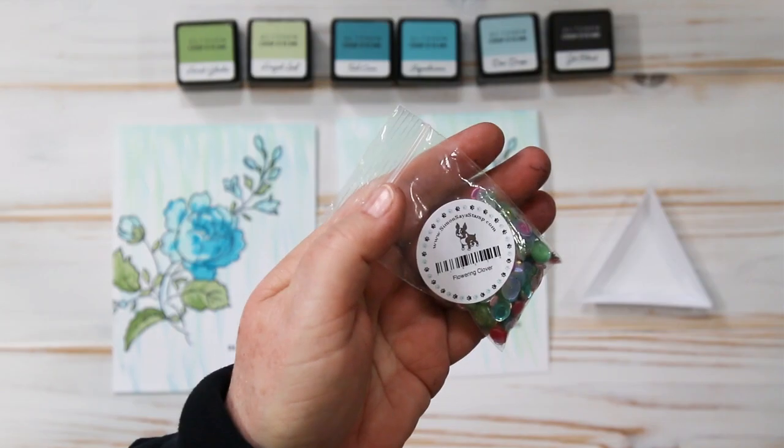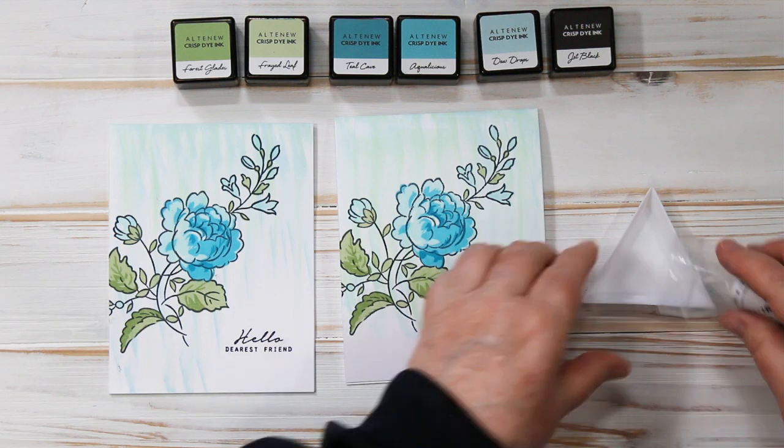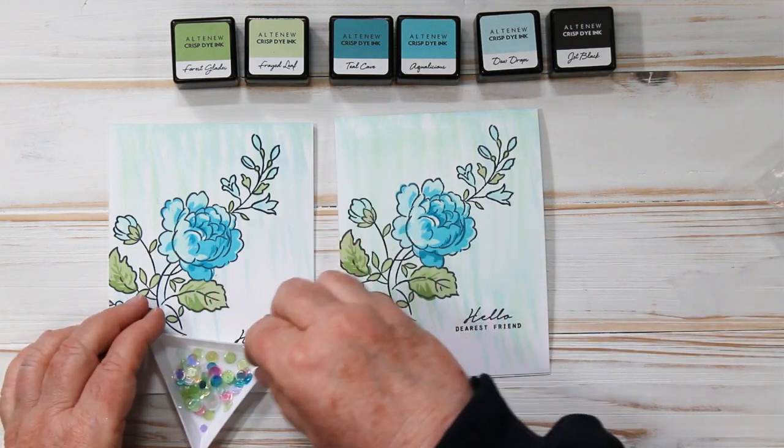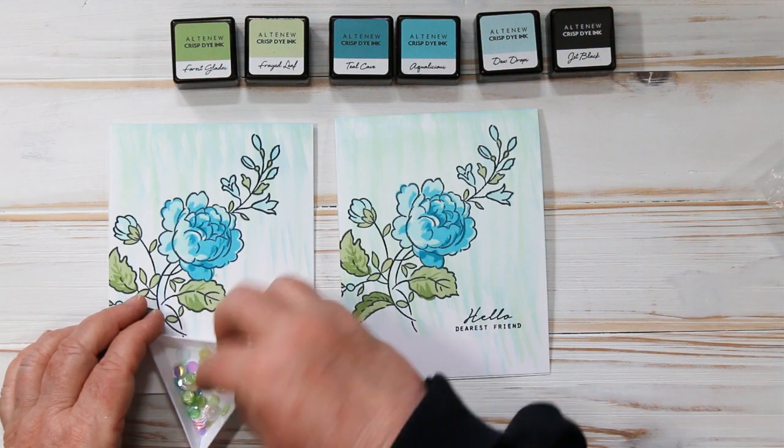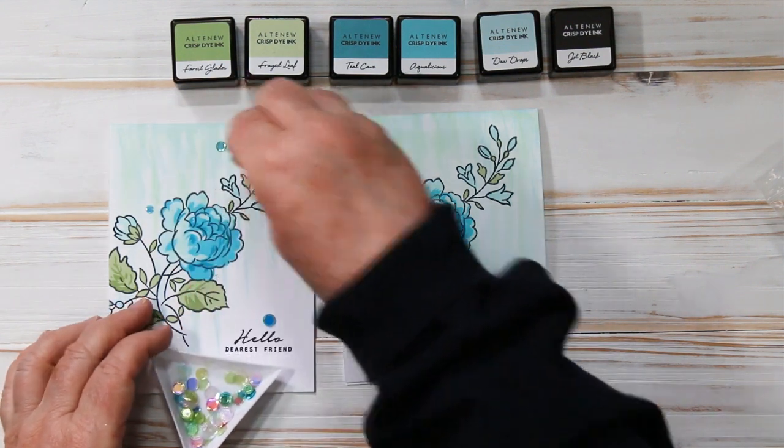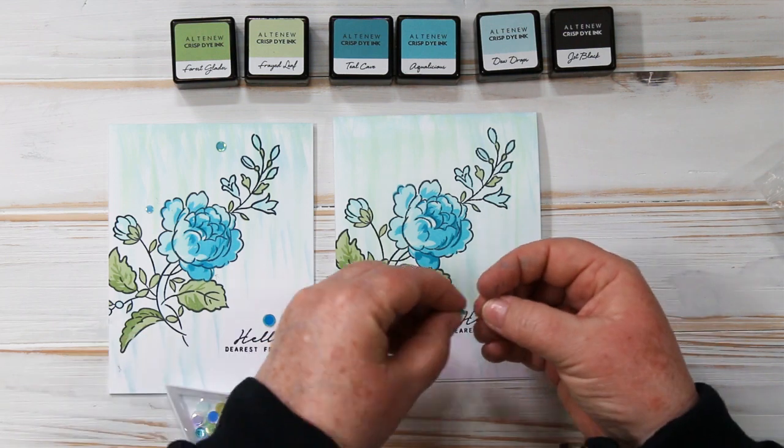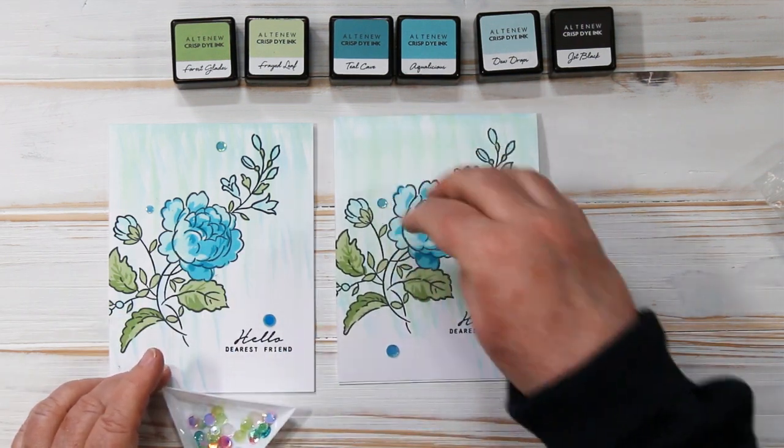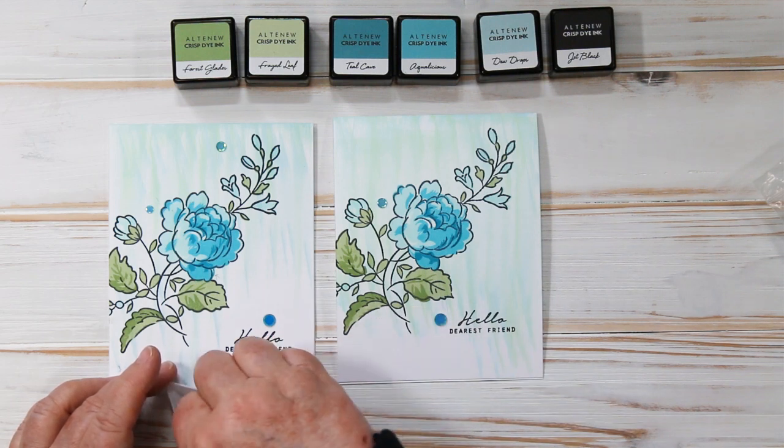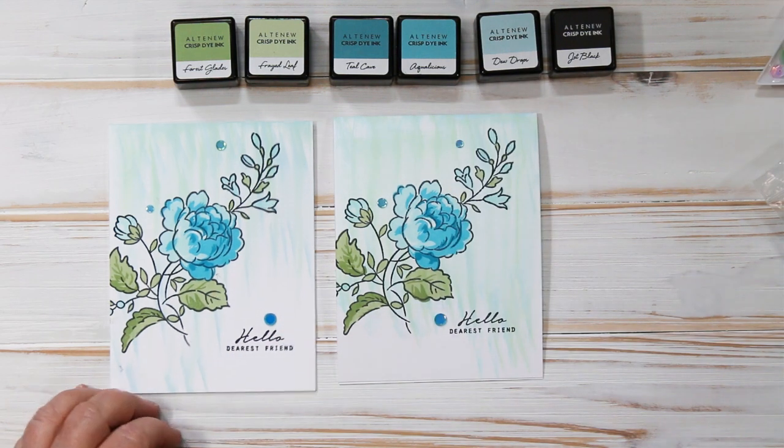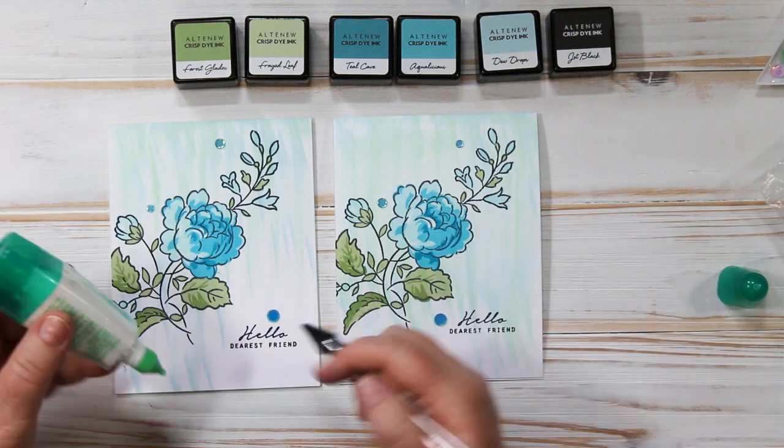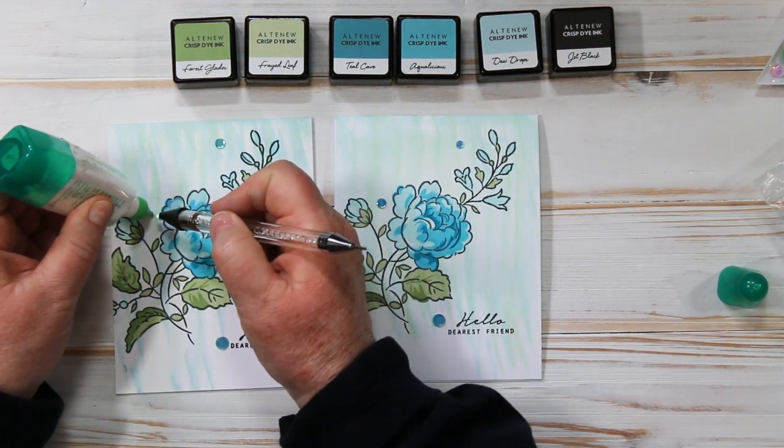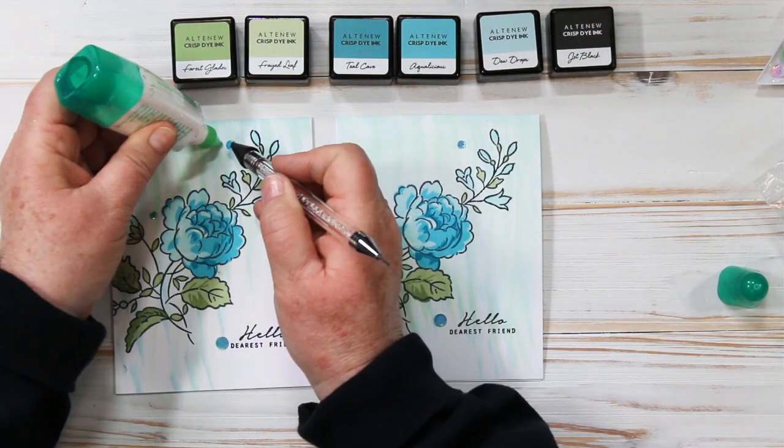I'm going to add a few sequins and these are from Seamus's Stamps, the Flowering Clover. It's a new package that just came out and the colors are really pretty—greens, blues, and a little bit of fuchsia and purple. I picked out some greens and blues to add to both of them and I am just going to use my Studio Katia wand to attach them with some white glue.